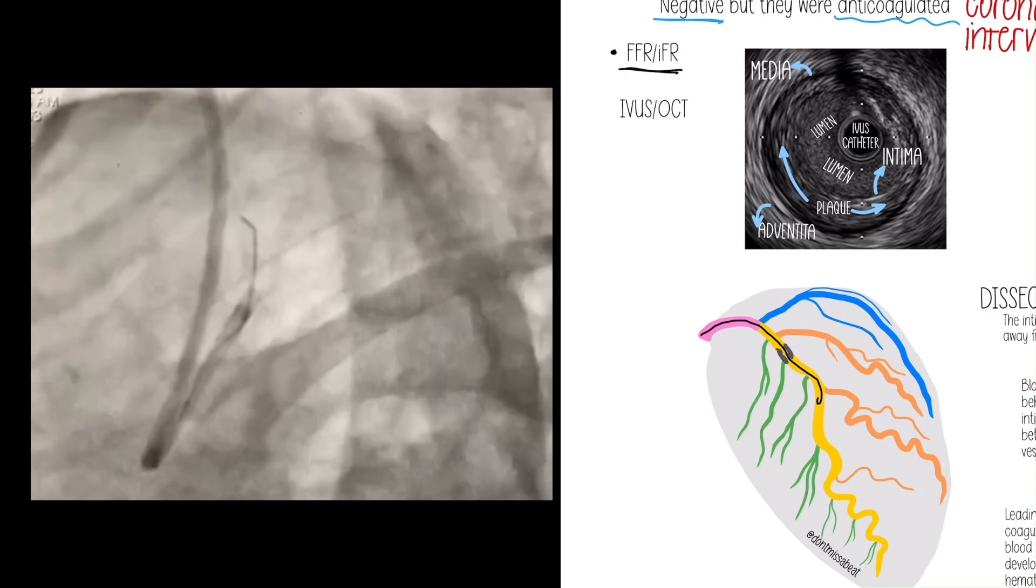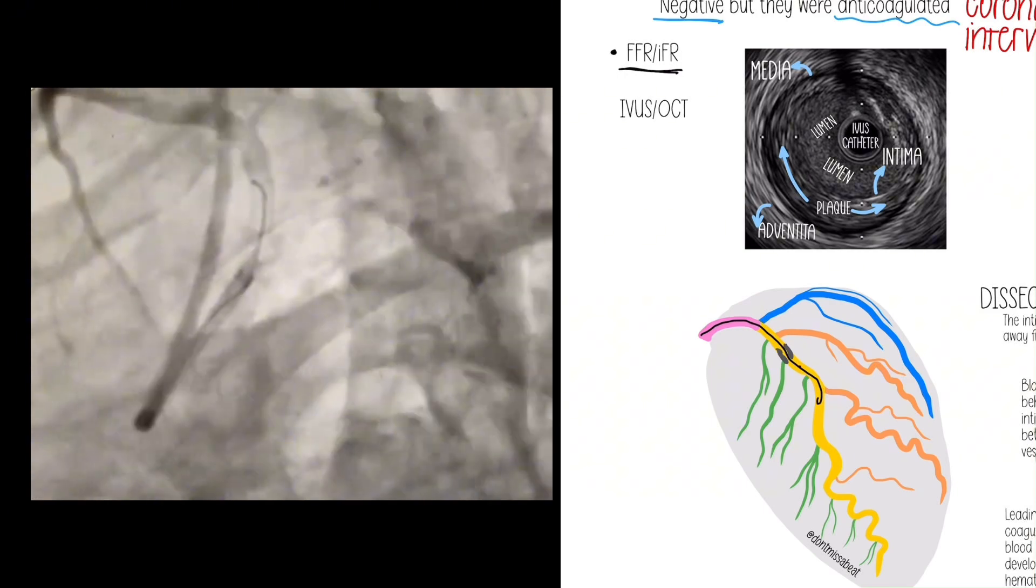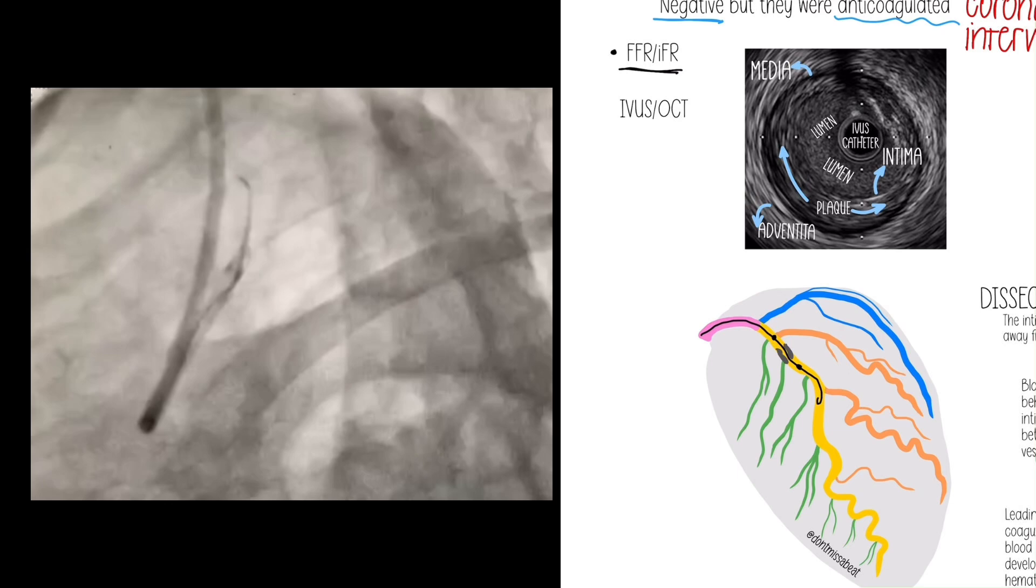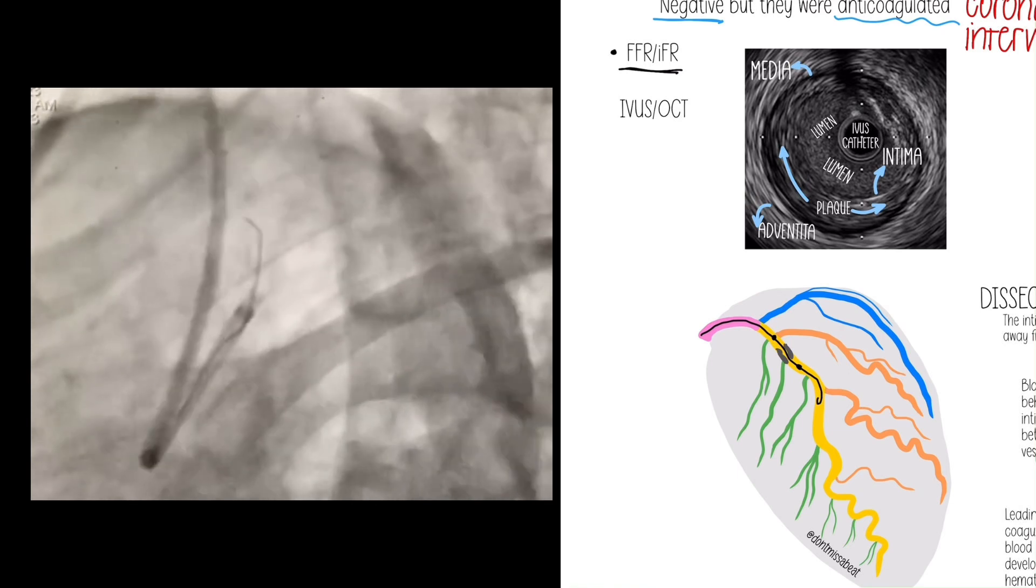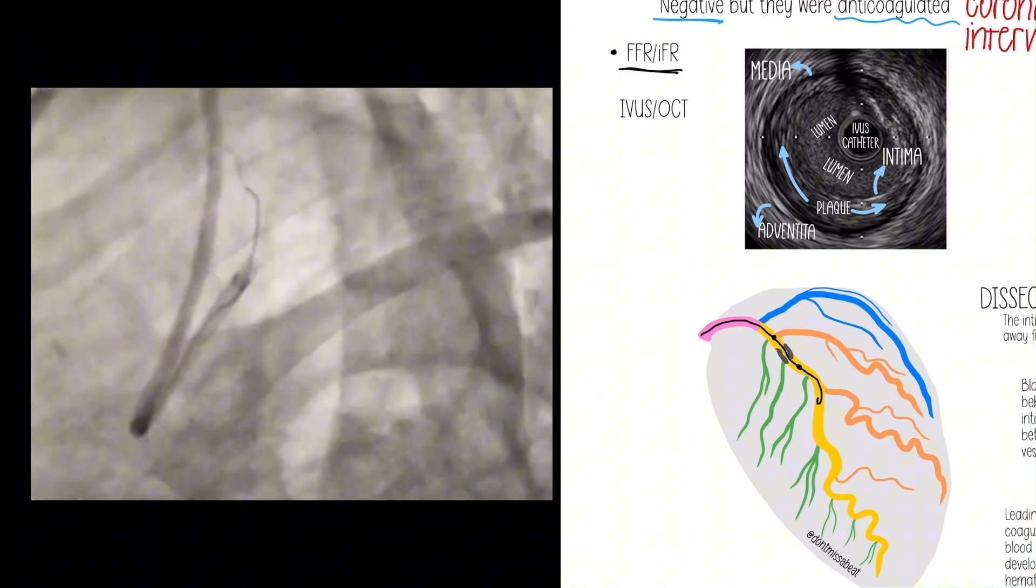We assess the pressure gradient before and after it, and it'll either be positive or negative. If it's positive we'll fix it, if it's negative we'll leave it. But they received angiomax or heparin in order to allow us to put that wire down the coronary.